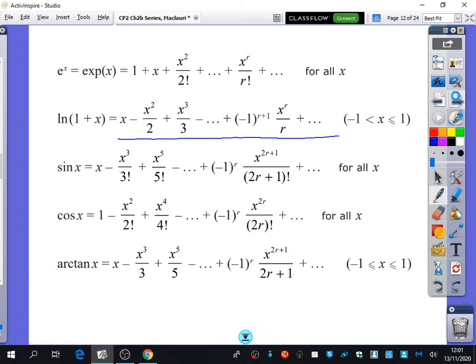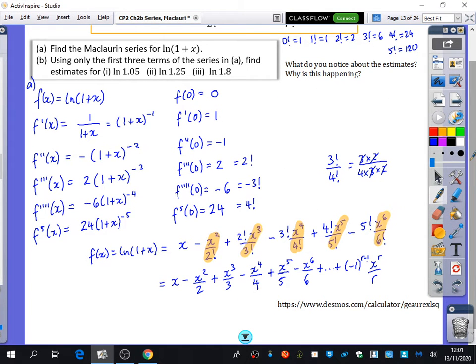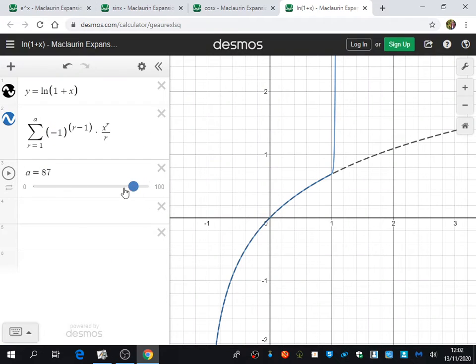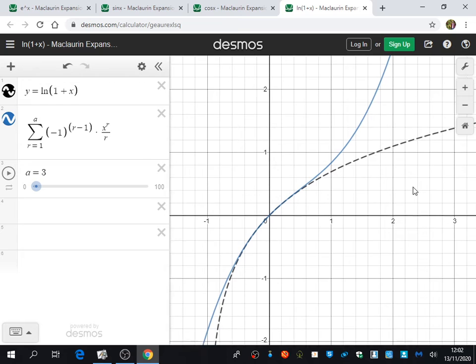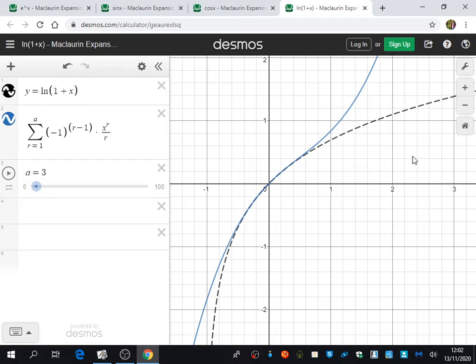So we're actually going to finish this question and do part B now. Part B says using only the first three terms, find estimates for ln(1.05), ln(1.25), and ln(1.8). We're only using the first three estimates. If I go back and put in A as 3, this is what the graph looks like. You can see for A equals 3, we're only using the first three terms. When we use the first three terms, it's pretty good when it's close to 0, but when it gets further away from 0, it's not going to be a very good estimate.